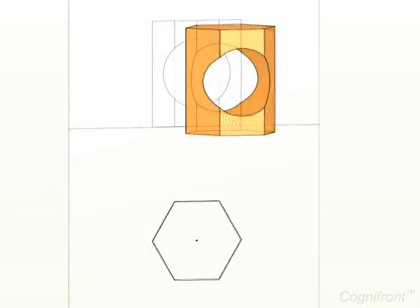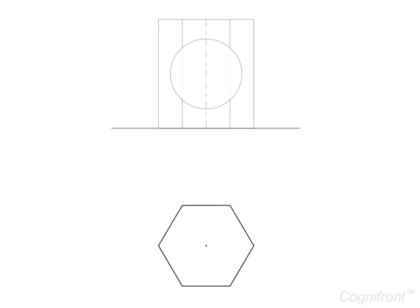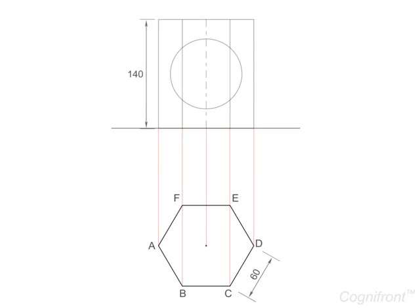First, draw its orthogonal view. The top view shows true shape and size of the hexagonal base of the prism. Project the details from top view to obtain the front view.